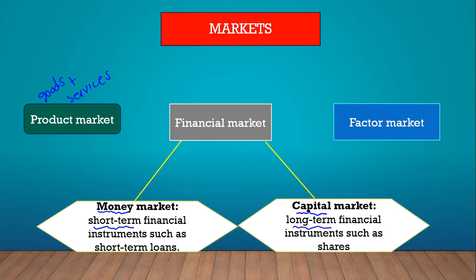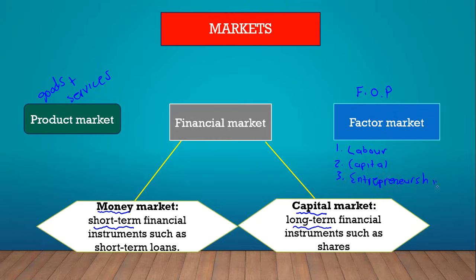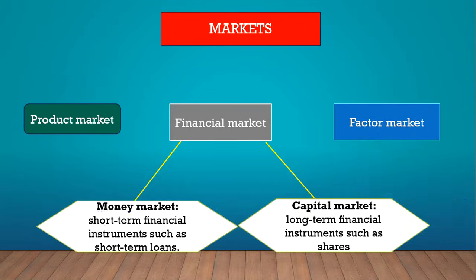The third market is the factor market, where the four factors of production are traded. The four factors of production are: land, labor, capital, entrepreneurship, and natural resources. So the four factors of production are traded in the factor market.